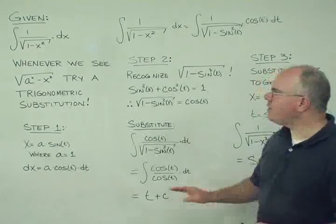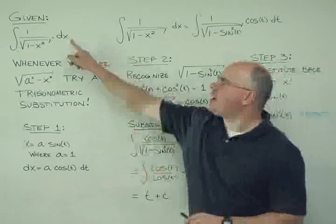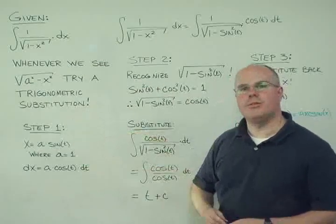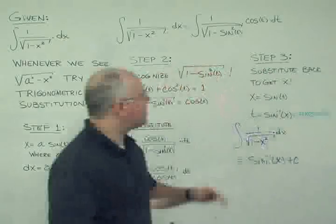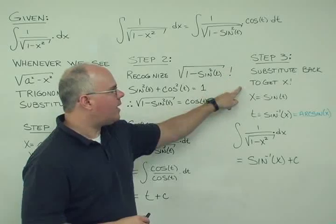But we're not finished, because the answer wasn't supposed to be in terms of t. It's supposed to be in terms of x. So we have to undo our substitution. So step three in this process is right here. We need to substitute back in order to get x.